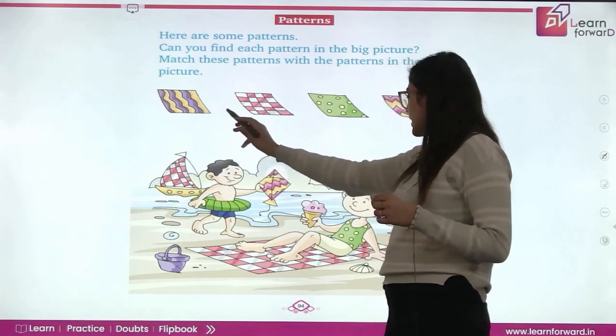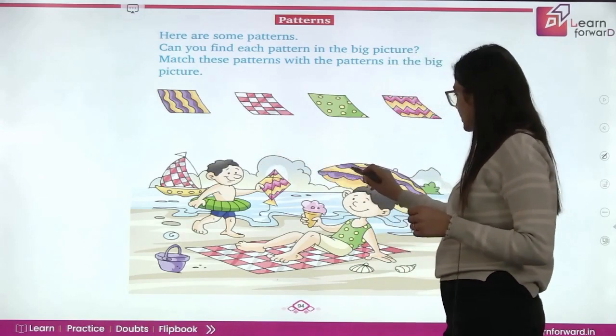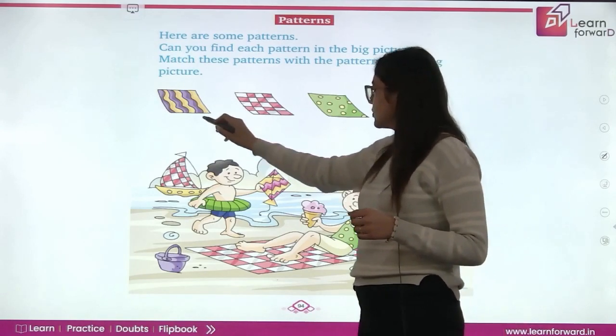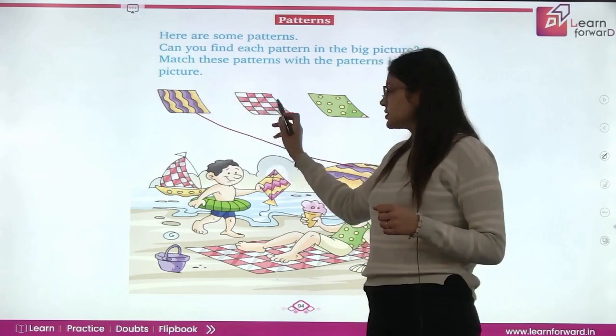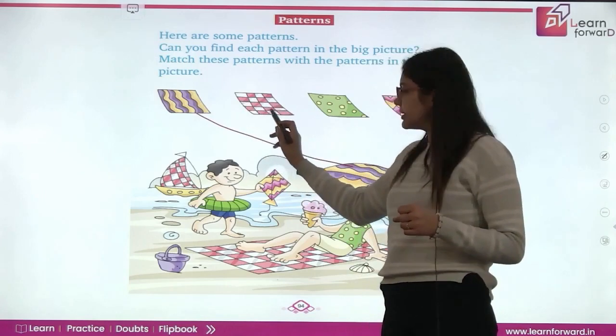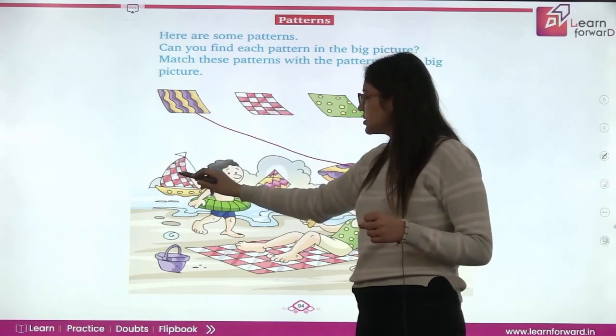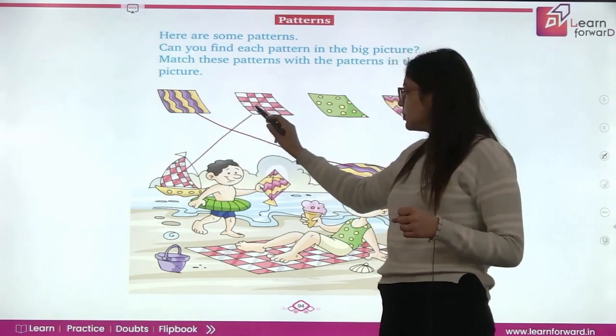This is yellow and purple lines — we will match this. Now, this is a check pattern, red and white in color. Here it is in the yacht. We will match it.